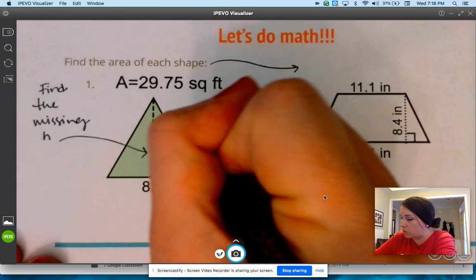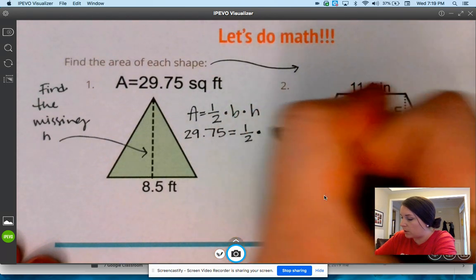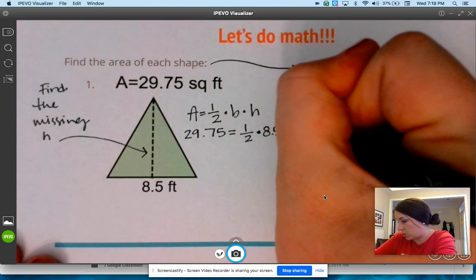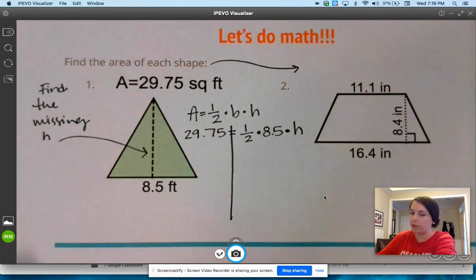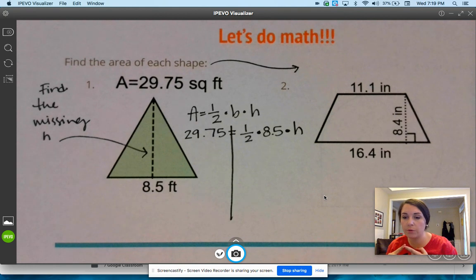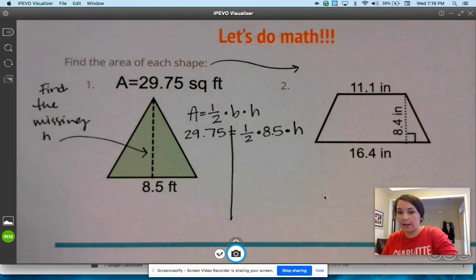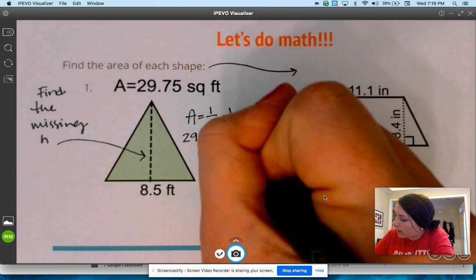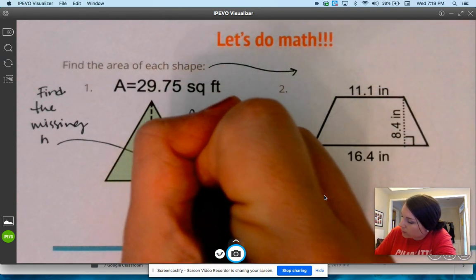Fill in what you know. So the area, 29.75, is equal to one-half times the base of 8.5 times the height, which we don't know. So I'm going to leave it as H. Draw your line. So we did what is the formula, fill in what we know. Now let's solve the formula. And I'm just going to use my calculator. Type it right in. Half of that is 4.25 times H. And then carry down the 29.75.